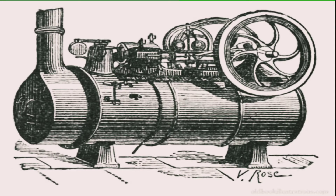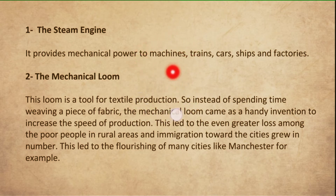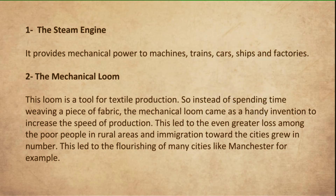The steam engine was the machine that helped in developing factories, and factories increased gradually. Cities changed into factories thanks to this machine, which provided mechanical power. Little by little, they were able to build large machines. Trains started to work, cars were invented, and ships — all thanks to the steam engine. This engine was the fundamental driver in developing British society.